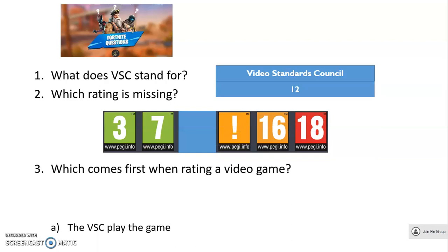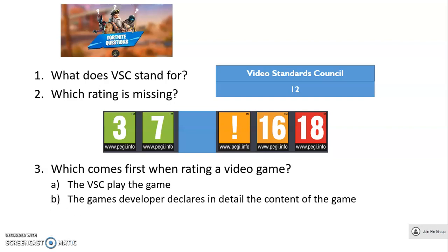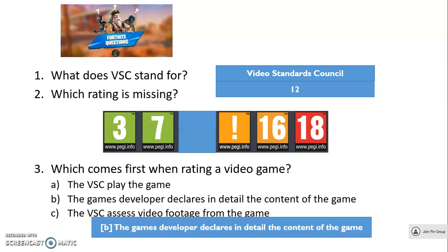And finally, which comes first when rating a video game? A — the VSC play the game. B — the game's developer declares in detail the content of the game. Or C — the VSC assess video footage from the game. Your answer should be B: the game developer declares in detail the content of the game. The idea of them doing that first is they give the VSC an idea of what they need to look for before anything else.